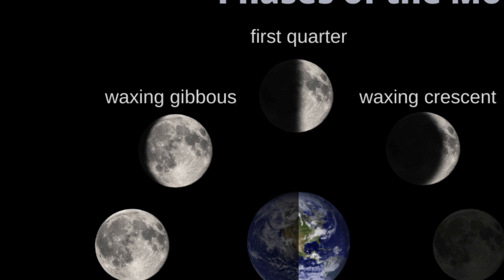Waxing gibbous. Following the first quarter, the illuminated portion continues to grow. More than half, but not yet full. This phase is known as waxing gibbous.